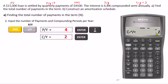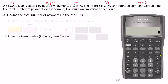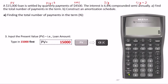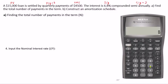Now we need to exit the PYCY worksheet by pressing 2nd and QIT. Next, we enter the present value of the loan, which was $15,000. The loan itself is money received and therefore is cash inflow, entered as a positive number. We press PV. Then we clear and enter the interest rate. The interest rate is 6.8% — type in 6.8 only and then press I.